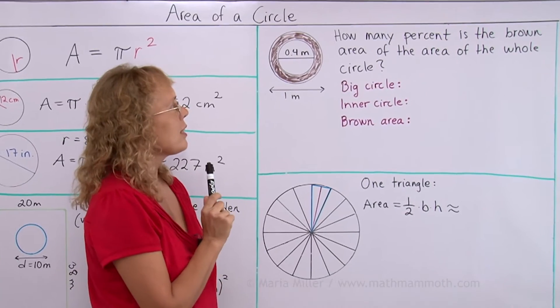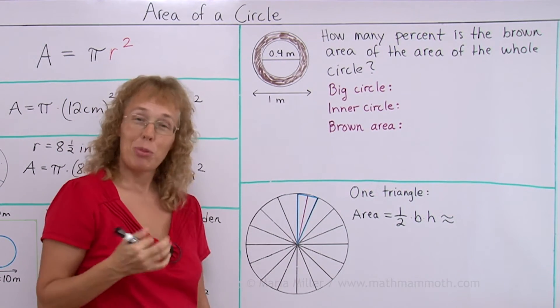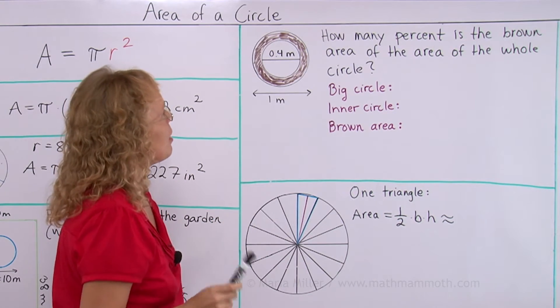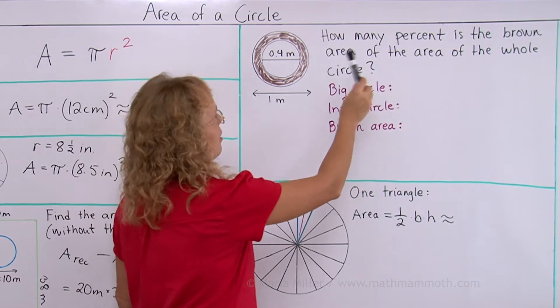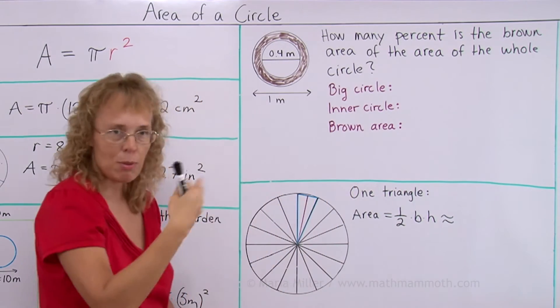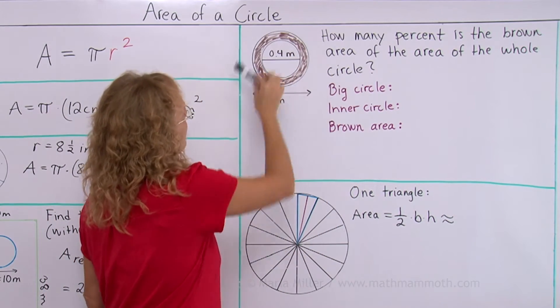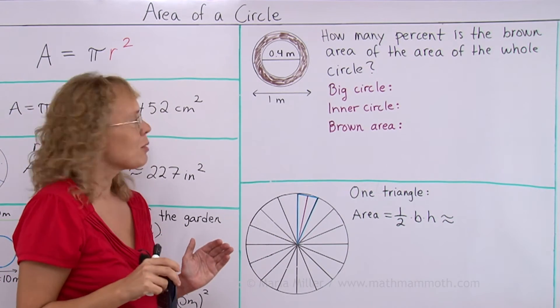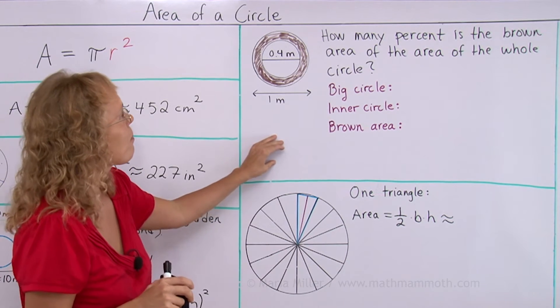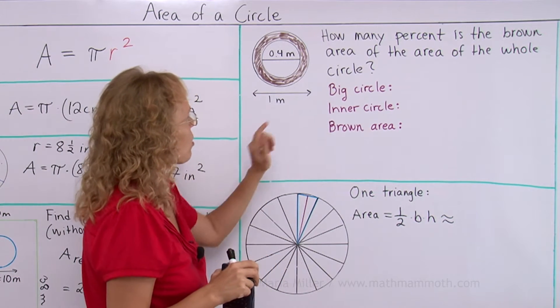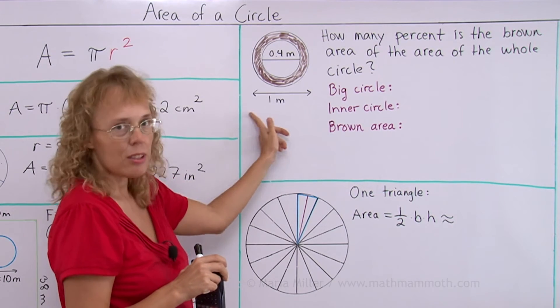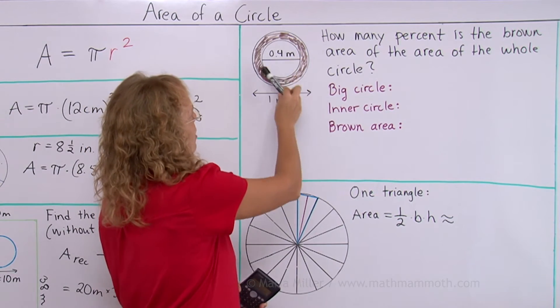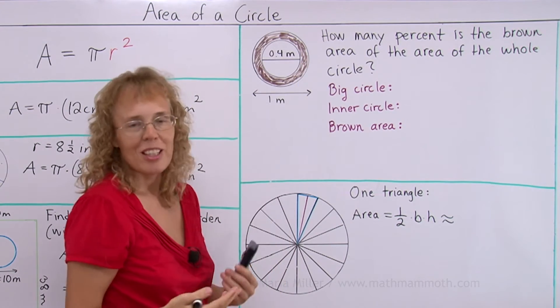How many percent is the brown area of the area of the whole circle? Here we have a percent problem, because we need to practice those too, right? But we first need to find the area of the whole circle, and the area of the brown area here. That is between those two circles. Once we find those, then we can find the percentage. The area of the whole circle is pretty easy. The diameter is given again. Then we will calculate this inner circle to be able to calculate the brown area.